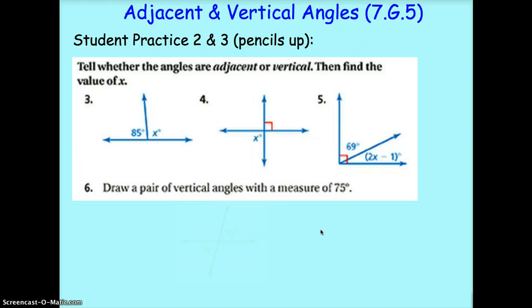Finally, number six. Draw a pair of vertical angles with a measure of 75. You can do that the same way we did it in the teacher example. And your drawing should look something like this. Okay. Hopefully, you understood the lesson for today. If you have any questions, please ask in class tomorrow. And have a great day.